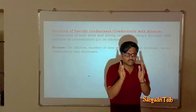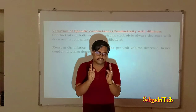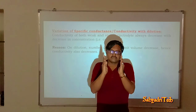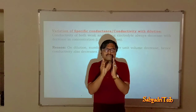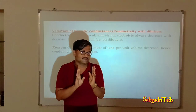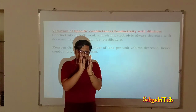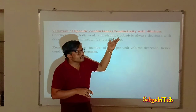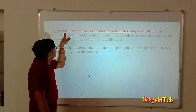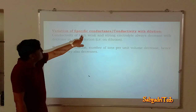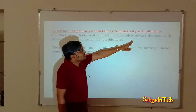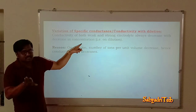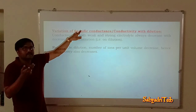On dilution — meaning we are decreasing the concentration — the number of ions per unit area of cross section decreases. So on dilution, the number of ions present in the unity area goes on decreasing. If the number of ions decreases, conductivity decreases. So specific conductance — that is, conductivity — of both weak as well as strong electrolyte always decreases with the decrease in concentration.